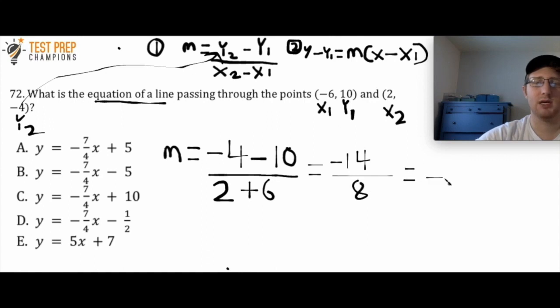And if I simplify, what is 14 divided by 2? That is 7. What's 8 divided by 2? That is 4. So I've just found that my slope is -7 over 4.